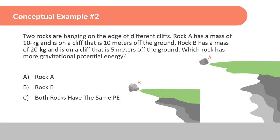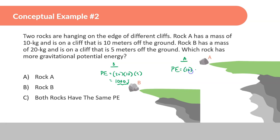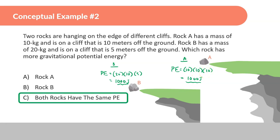Second example: Rock A is 10 kg on a cliff 10 meters off the ground; Rock B is 20 kg on a cliff 5 meters off the ground. For Rock B: PE = 20 × 10 × 5 = 1000 joules. For Rock A: PE = 10 × 10 × 10 = 1000 joules. Both rocks have the same amount of potential energy.